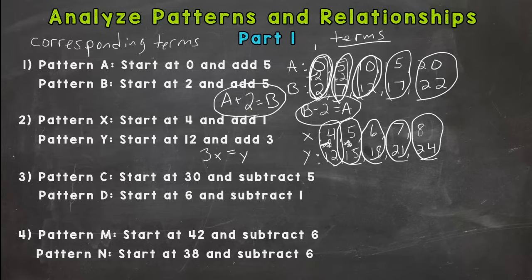All right, let's do number 3 here. We have C and D. So we start at 30 and subtract 5. Here's our pattern. As I write out D, see if you can notice the relationship between corresponding terms. Start at 6, subtract 1. So a nice little countdown here. 6, 5, 4, 3, 2.